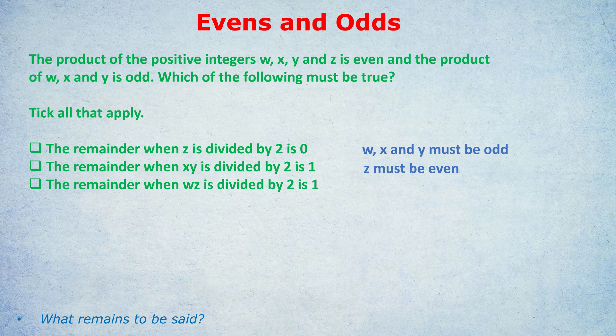Statement two: the remainder when X times Y is divided by two is one. What numbers, when you divide them by two, give a remainder of one? All odd numbers — any odd number divided by two gives a remainder of one. So statement two is actually asking: is X times Y odd? And we know it is, because X and Y are both odd. An odd times an odd is odd, so the remainder will be one. Statement two is also true.